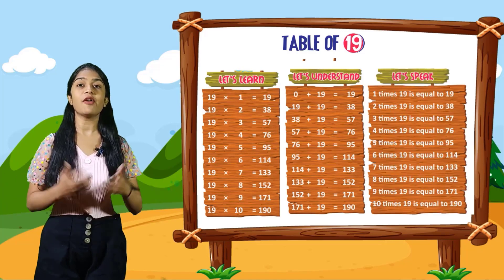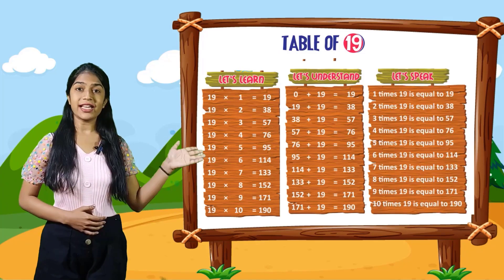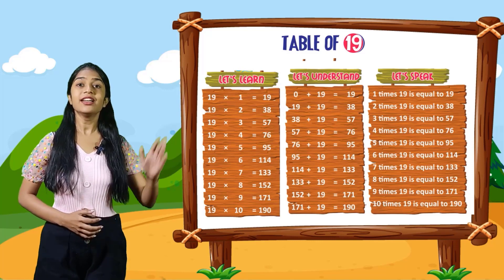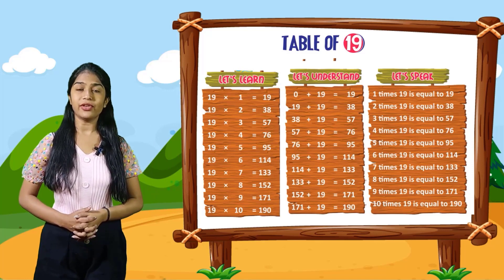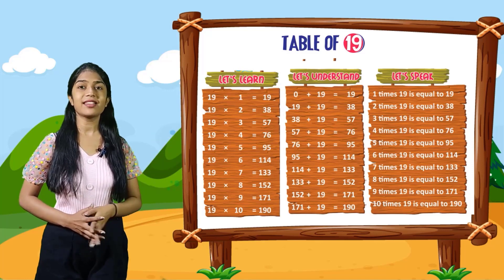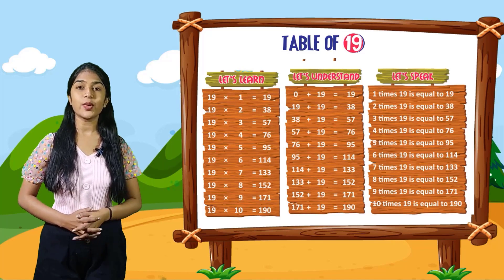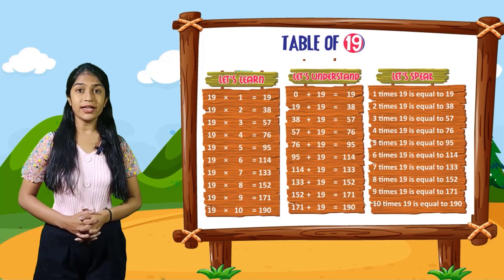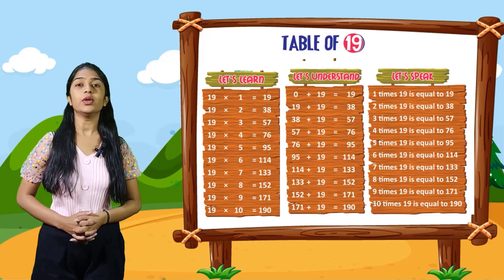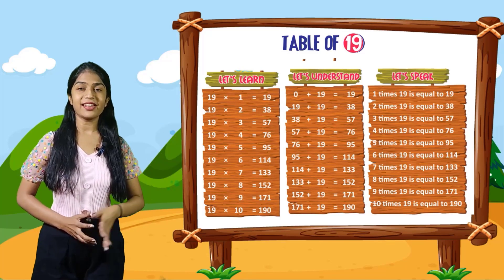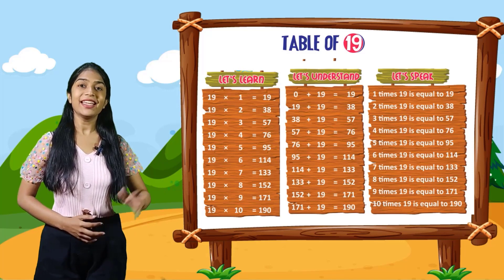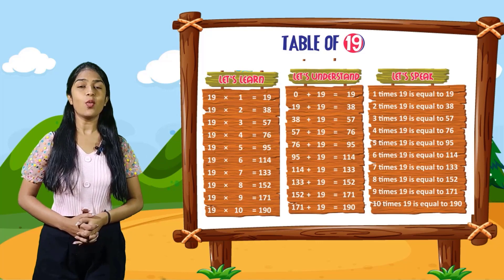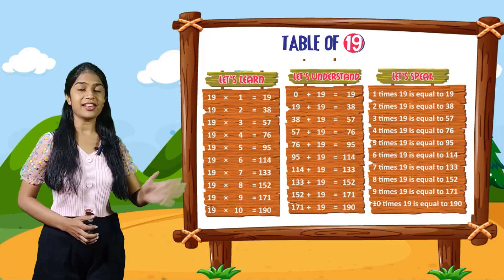So now let's speak. You have to speak out with me. 1 times 19 is equal to 19. 2 times 19 is equal to 38. 3 times 19 is equal to 57. 4 times 19 is equal to 76. 5 times 19 is equal to 95. 6 times 19 is equal to 114. 7 times 19 is equal to 133. 8 times 19 is equal to 152. 9 times 19 is equal to 171. 10 times 19 is equal to 190.